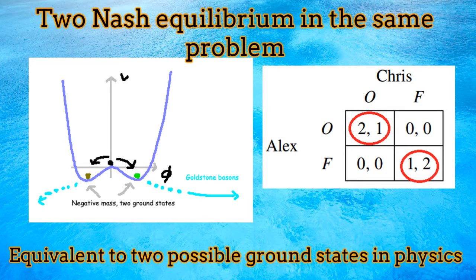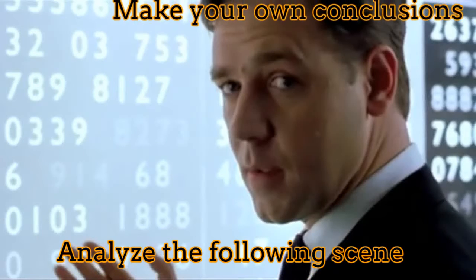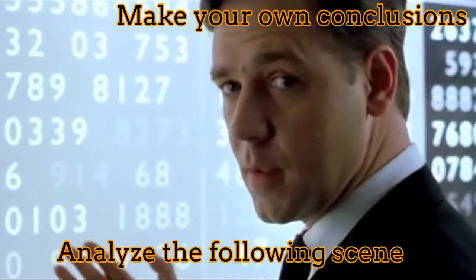Chris loves Football while Alex loves the Opera. If they don't meet at the venue, they will have a zero payoff. It turns out that there are two possible Nash Equilibria if there is no dominant person. This is equivalent to having two possible ground states, exactly as it occurs in some situations in physics. Selecting one state or the other depends on some random fluctuations, which will depend on Chris and Alex's intuition.